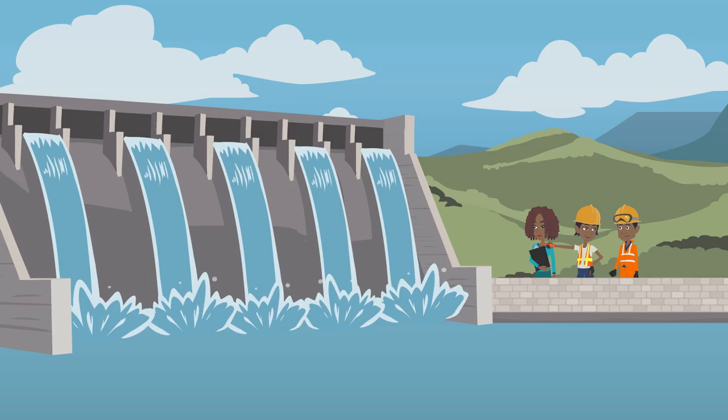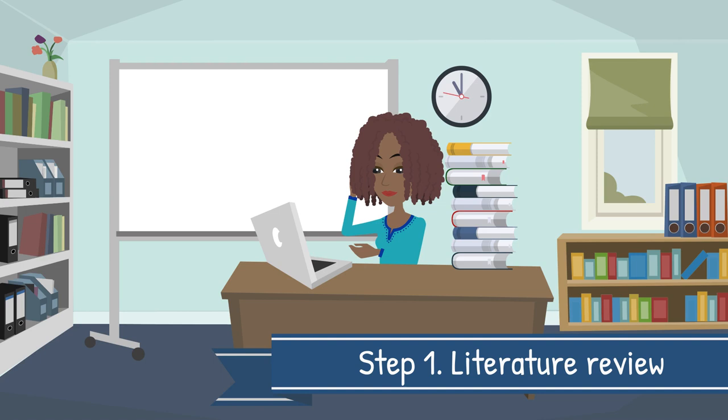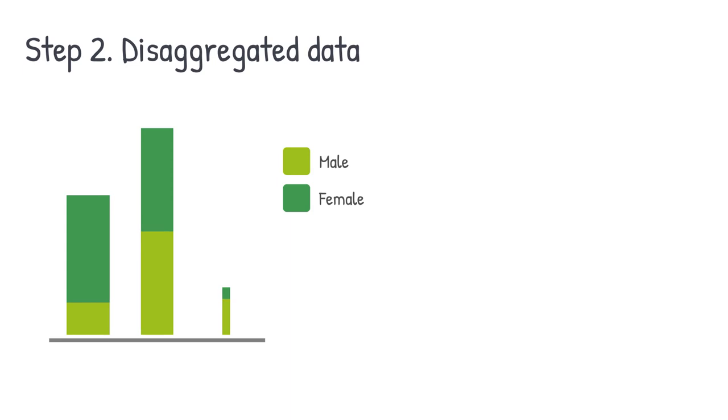This starts before you go into the field. The first step is to identify studies and talk to people, so that you can learn about research and actions that have already taken place in the local area or nearby. Next, you need to source disaggregated data to give you an understanding of differences and vulnerabilities within the community. Step 3, stakeholder mapping, will help you to identify a range of perspectives from a diversity of people.